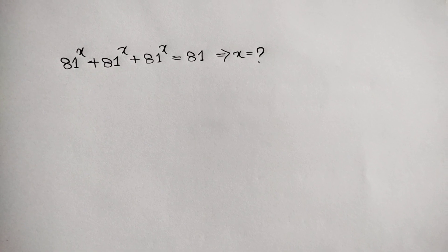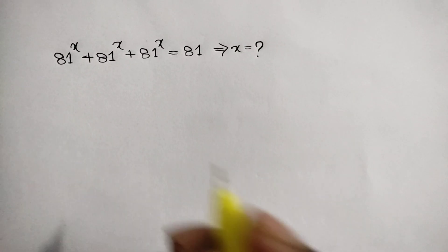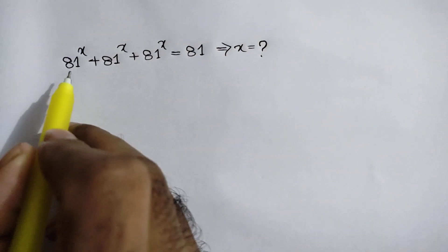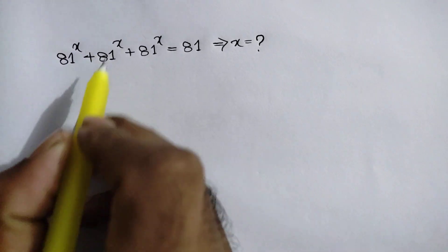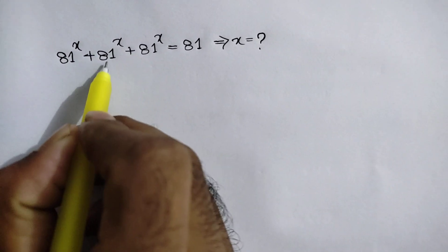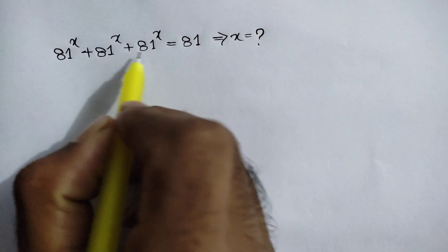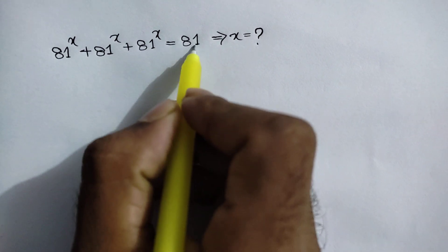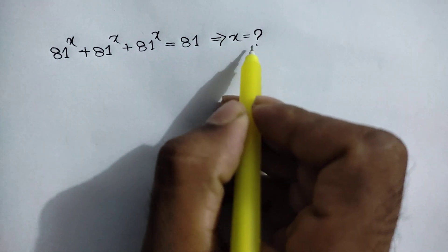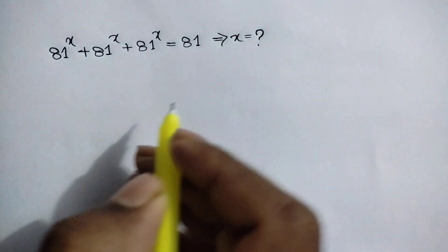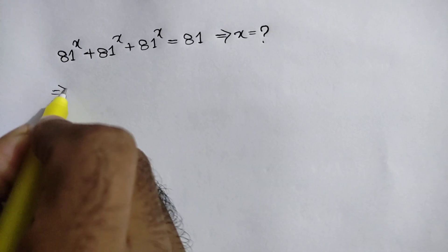Hi everyone, can you solve this math problem? 81 to the power x plus 81 to the power x plus 81 to the power x is equal to 81. Here, x is equal to what? At first, we can take common 81 to the power x.